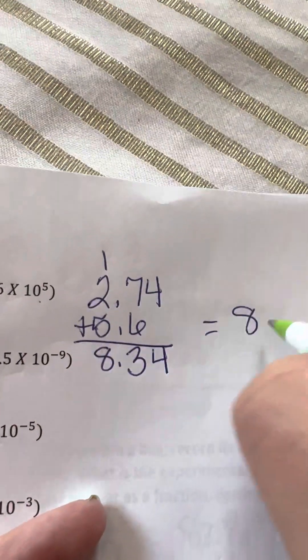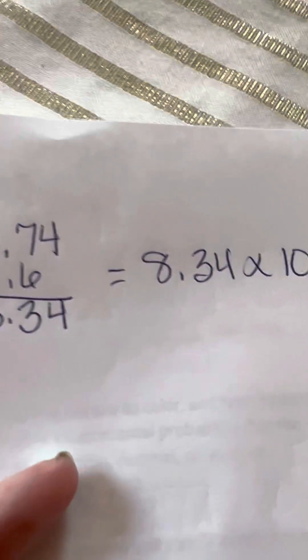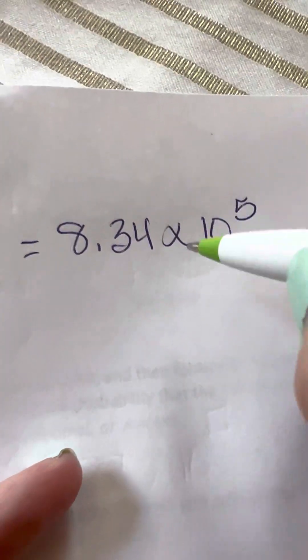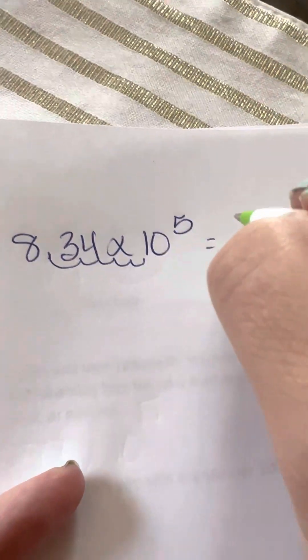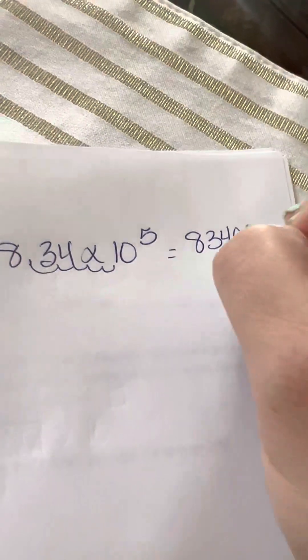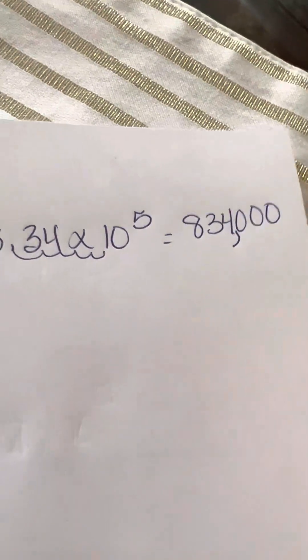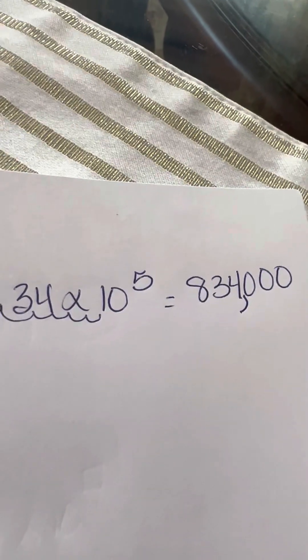And we're going to end up with 8.34 times 10 to the 5th, which is 834,000. And I'm okay if you leave your answer in scientific notation. I just went ahead and worked it out.